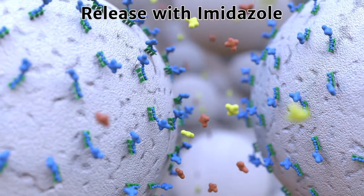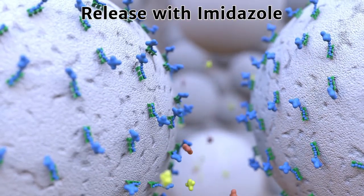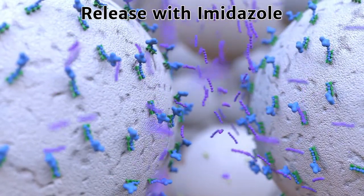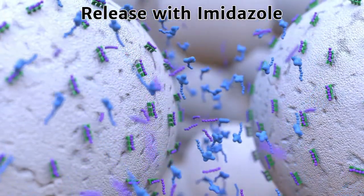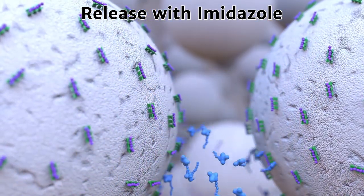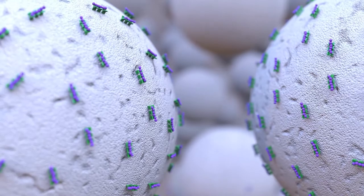To release or elute the bound protein from the resin, imidazole, a molecule very similar to histidine, is washed over the column. This causes the his tag protein to separate from the resin and be collected in the eluent.